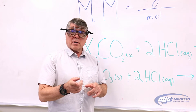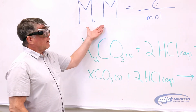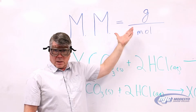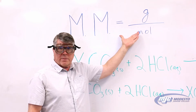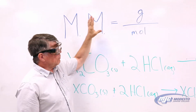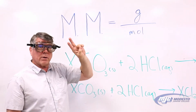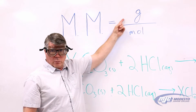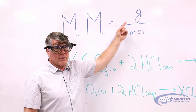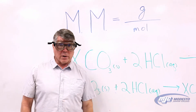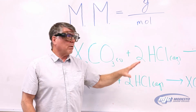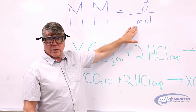Let's talk about molar mass. Molar mass is grams per mole — how many grams we have in a mole of that compound. In order to determine the molar mass, we need two numbers: we need to know how much it weighs and how many moles we have. The top part's easy — we're going to weigh our unknown carbonate and that gives us the grams. All the rest of the experiment is to get the moles.